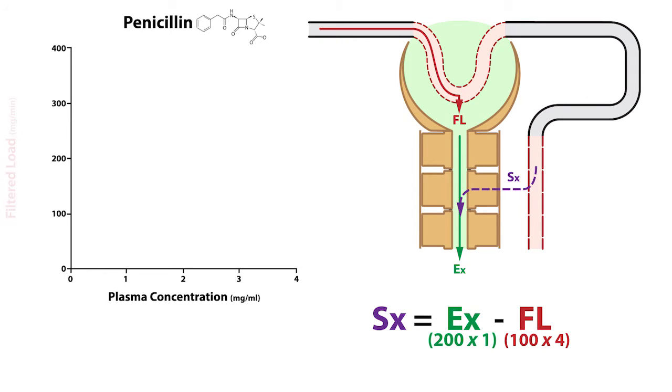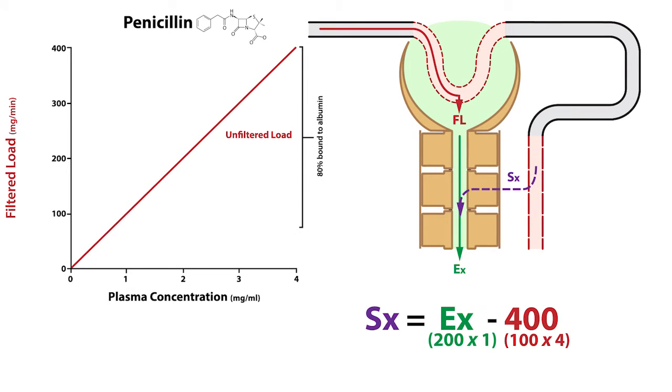Given these values, the filtered load equals 400 milligrams per minute. However, because 80% of penicillin is bound to plasma proteins, 80% is unfilterable. The other 20% of plasma penicillin is not bound to plasma proteins and is filterable. In other words, only 20% or 80 milligrams per minute of the maximum theoretical filtered load is actually filtered.